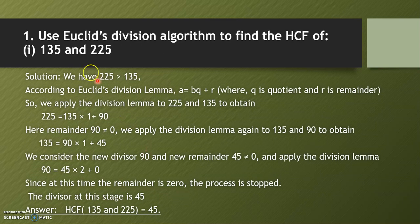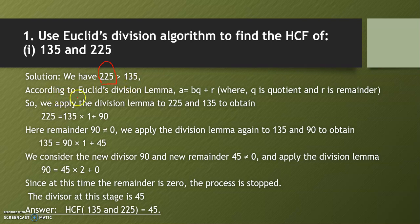Let's do the first question of the exercise: Use Euclid's division algorithm to find the HCF of 135 and 225. First, decide which number is greater. Here, 225 is greater than 135. According to Euclid's division lemma, apply A = Bq + R, where A = 225 and B = 135.